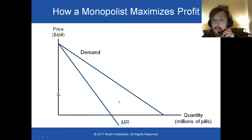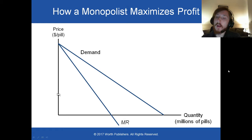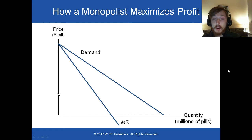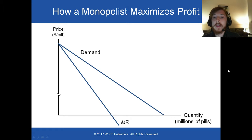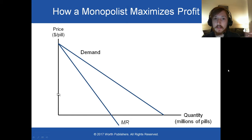How does a monopolist maximize their profit? They face a downward sloping demand curve. But unlike in perfect competition, they can choose both the quantity produced and their price — in fact, they choose both at once.